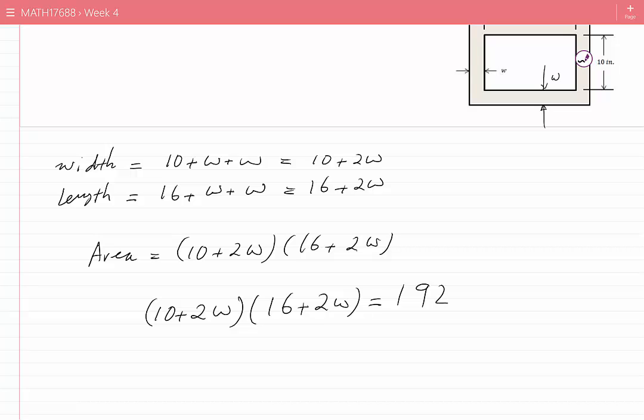This puts one restriction on the value of W. In other words, W cannot have any value. It must satisfy this equation if we would like the cross-sectional area to be 192.